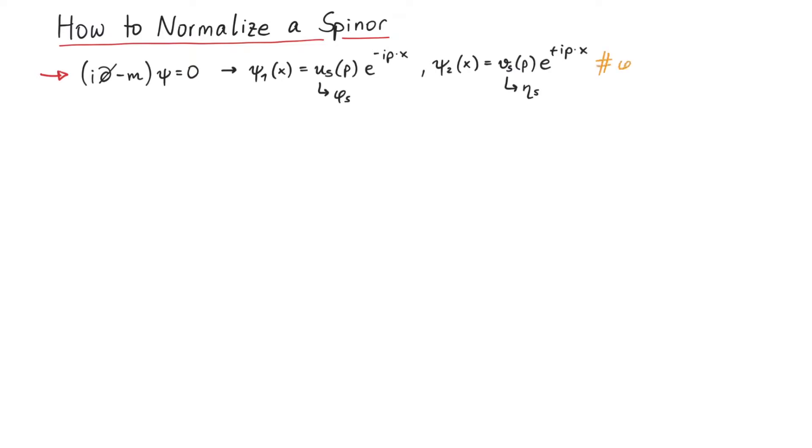Now, although phi and eta are conventionally normalized themselves, this does not fix the normalization of u or v. So, how do we choose a normalization? Furthermore, do we use u dagger u or the Dirac adjoint u bar u?